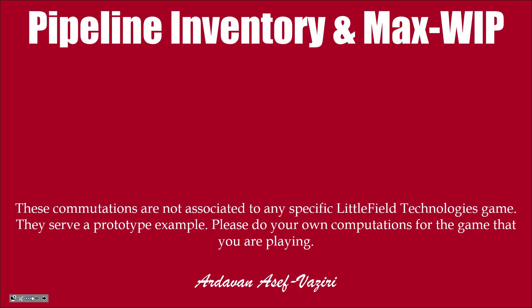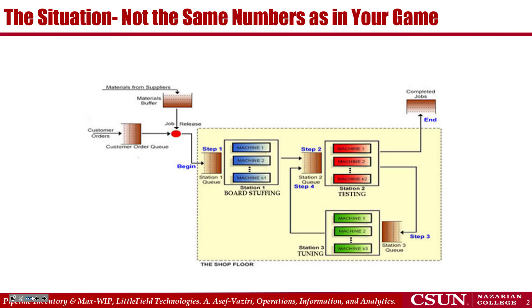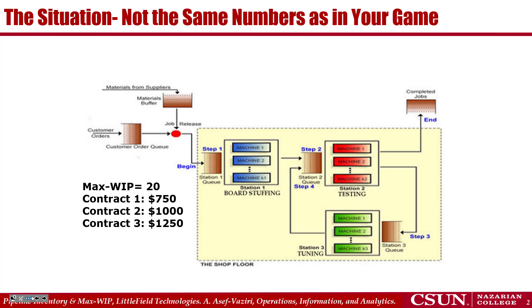This is a talk about pipeline inventory and maximum work-in-process (WIP). I'm going to teach this material using the Littlefield technology game as a testbed. The concepts are general concepts in capacity planning and throughput analysis, but I also like to see their instantiation in the Littlefield game. For now, suppose in this production environment we have set the maximum WIP — the maximum number of loads that can be inside the system — to 70.